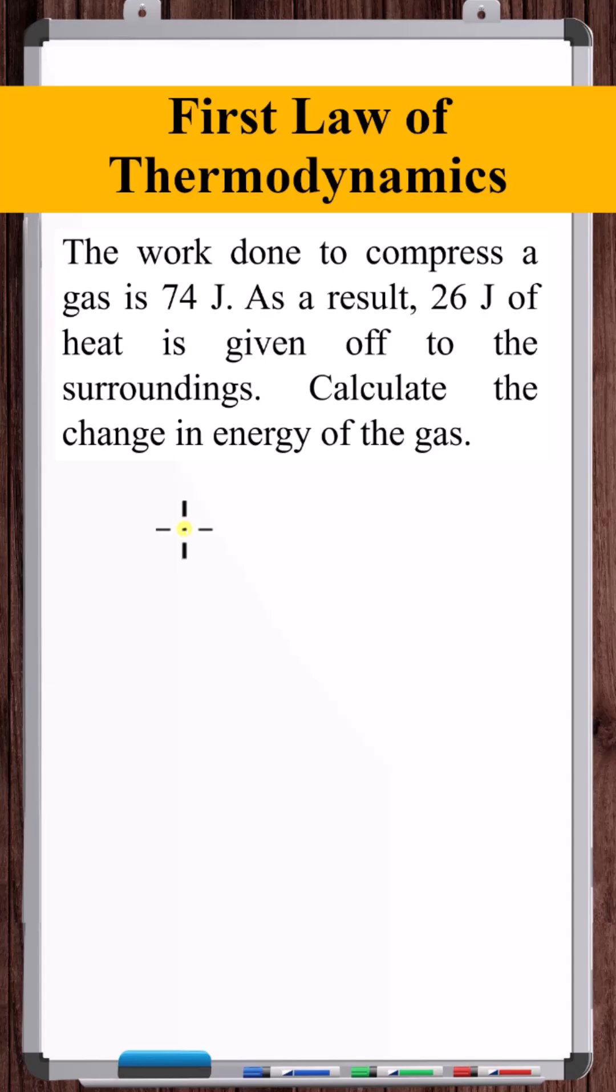The simplified form of the First Law of Thermodynamics that we use to study general chemical reactions is: the change in internal energy of the system equals the heat transferred into the system plus the work done on the system, specifically the PV work.